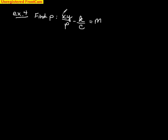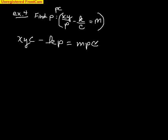So once again we're going to multiply both sides, multiply every term by the common denominator which is pc. So the p's cross out so we get xyc, the c's cross out and we get kp, and then there's nothing to cross out so we get mpc. We get the p's by themselves which means we have to add kp to both sides so we get xyc equals kp plus, we're adding kp to both sides, mpc.